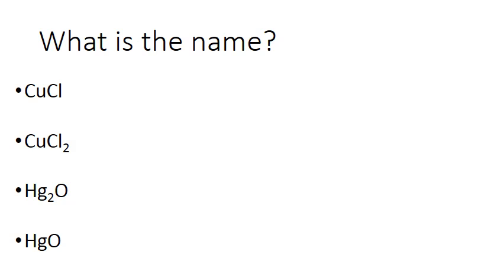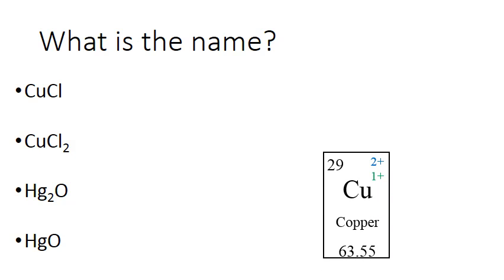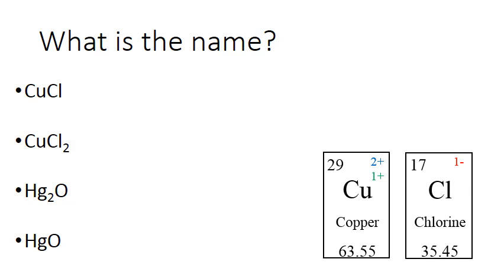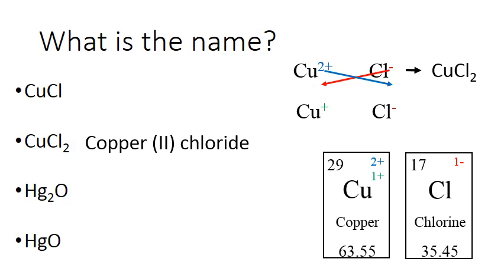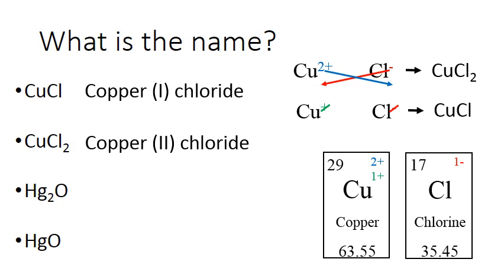Now let's go through some examples and figure out what the names are. We have CuCl and CuCl2 — both are copper and chlorine together. Copper is a multivalent element; it can be 2+ or 1+. Chlorine is 1-. Starting with copper 2+, when we cross those down, we get CuCl2, so that's copper(2) chloride. When copper is 1+ and chlorine is 1-, they're the same, so we cross them out and get CuCl, which must be copper(1) chloride.